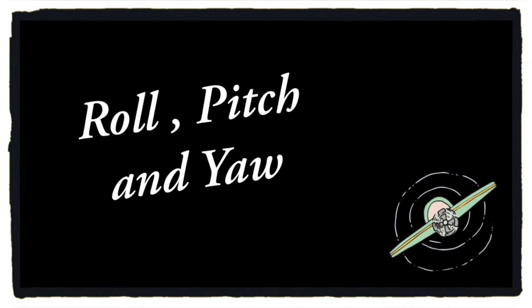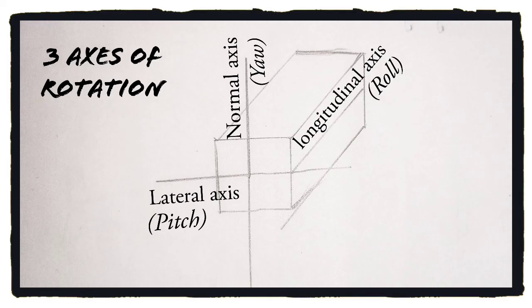An aircraft performs mainly three movements: roll, pitch, and yaw. The pitch is performed with rotation of the lateral axis, roll with rotation of the longitudinal axis, and yaw with rotation of the normal axis.